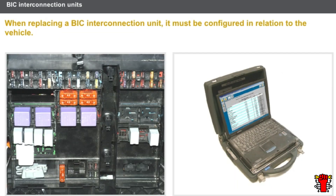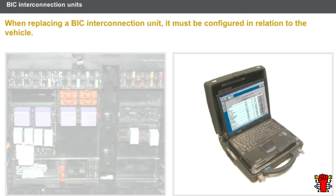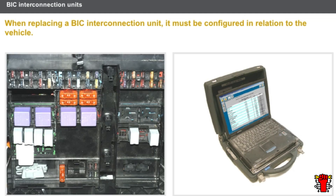When replacing a BIC interconnection unit, it must be configured in relation to the vehicle. This configuration depends on the following factors: installation of certain fuses and relays, installation of certain electrical shunts, and configuration with the diagnostic tool.